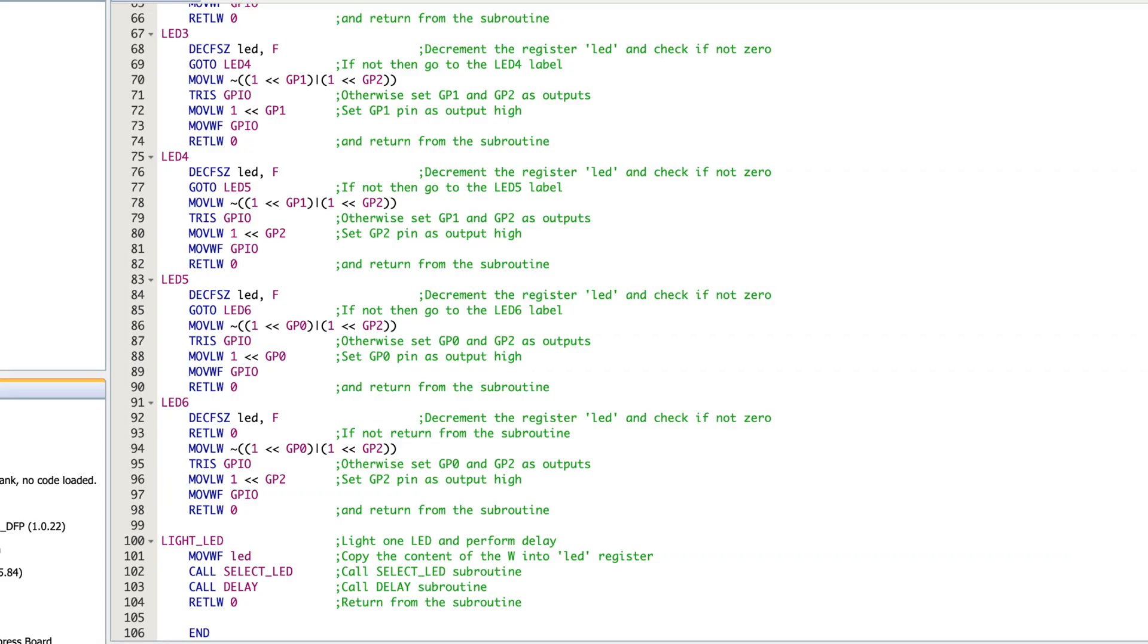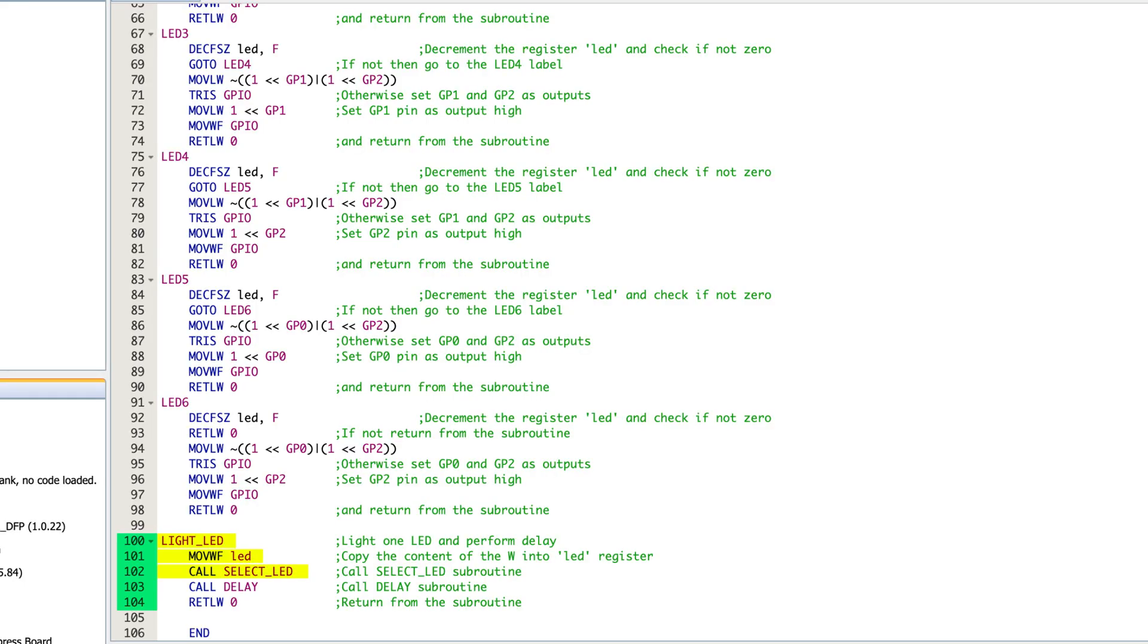And that subroutine looks in the working register to figure out exactly what LED should be lit up. And then it lights it up. So that light LED subroutine is down at line 100. So it's basically taking that working register, putting it into the LED register, and then selecting the LED based off of that, calling the delay, because otherwise this is going to run too fast for you to be able to see anything. And then you go back and you start over again. So again, very simple. So as we go and we do the select LED, this is the most complicated portion of the entire program, and it's not even that complicated.